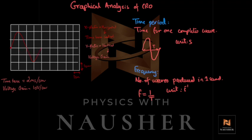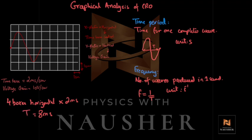You have 4 boxes horizontally, and your time base setting is 2 ms per centimeter. So you multiply 4 boxes by 2 ms to get 8 ms. That is your time period, because the time period is the time for one complete wave.